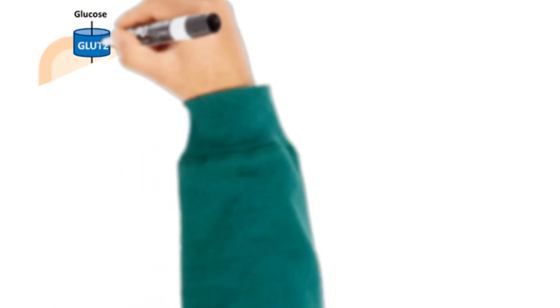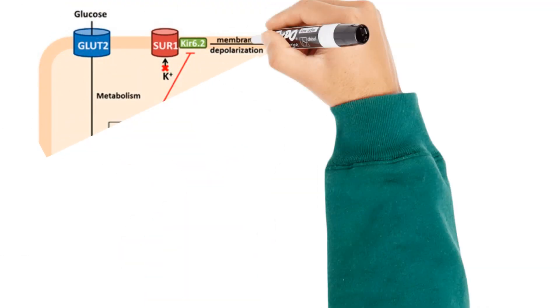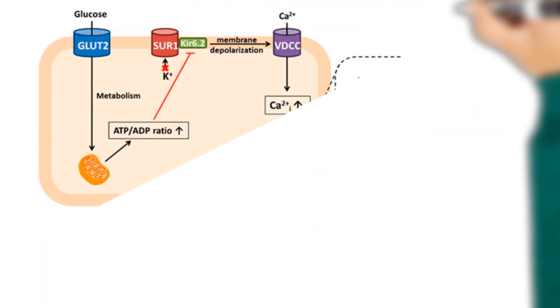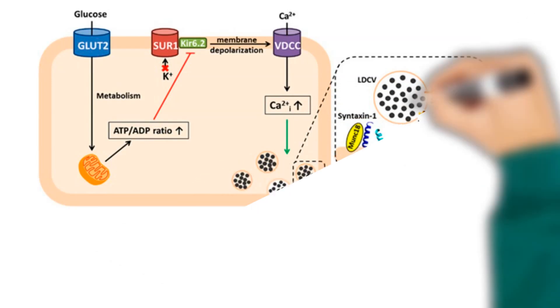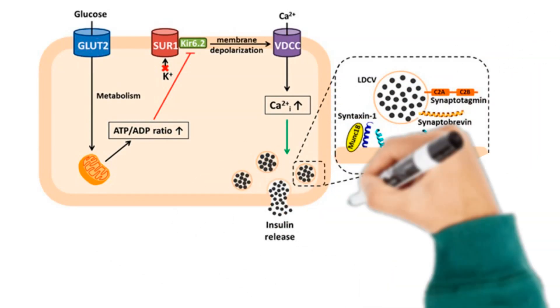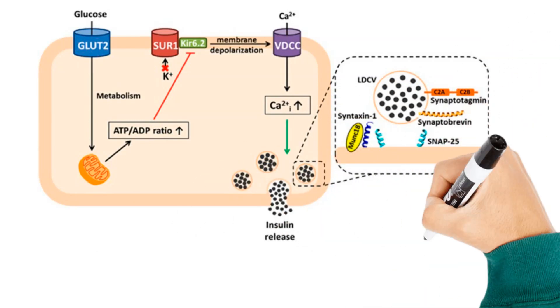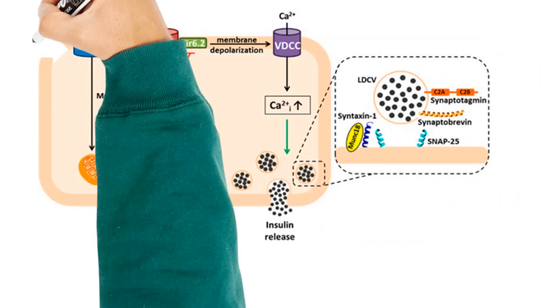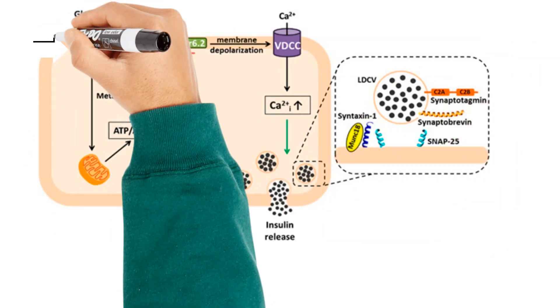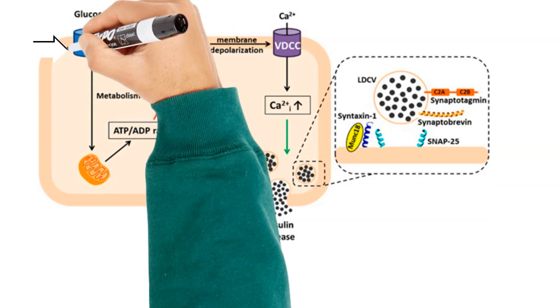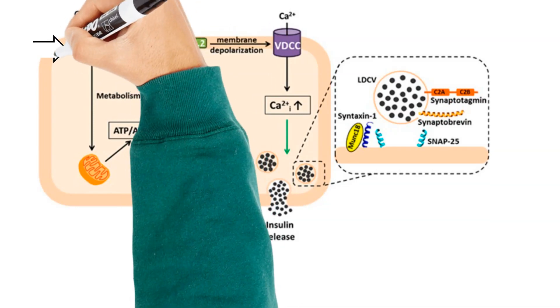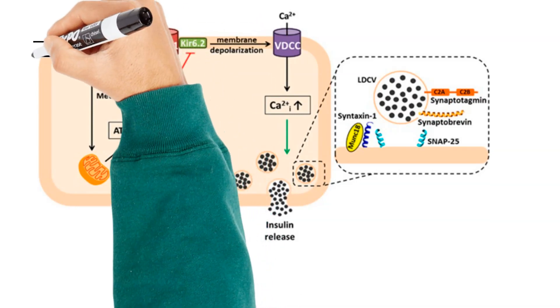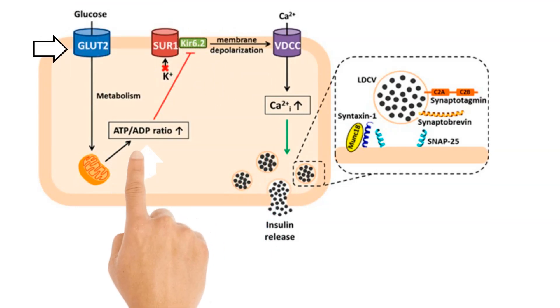The mechanism involves uptake of glucose by the beta cells via glucose transporter 2 (GLUT2), where glucose is phosphorylated to glucose-6-phosphate, resulting in the generation of ATP.